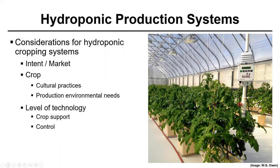Before I introduce the different types of hydroponic systems that can be utilized in controlled environments, we need to first look at some of the considerations when one goes to select the system. That first consideration is the intent of why one wants to produce hydroponic crops. Has one determined a market, or are you just growing it for pleasure or for education? Once you have identified the intent and the market, one can select the appropriate crop to fill that market void or educational gap that is needed.